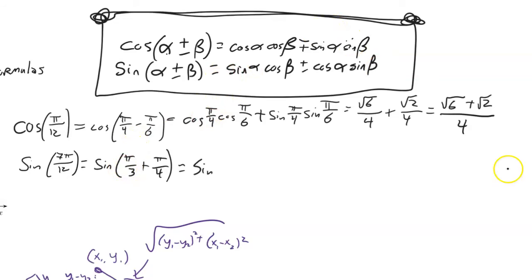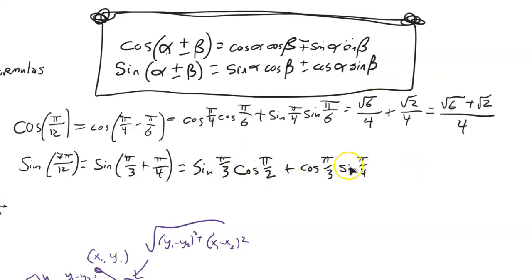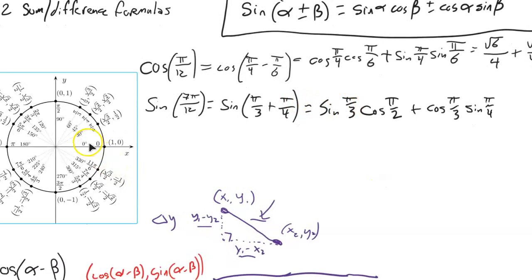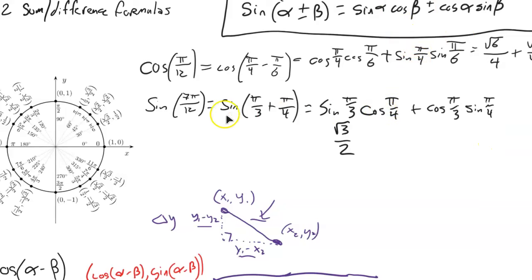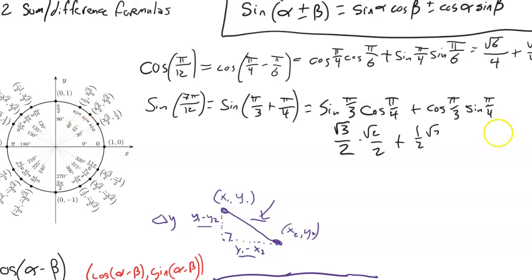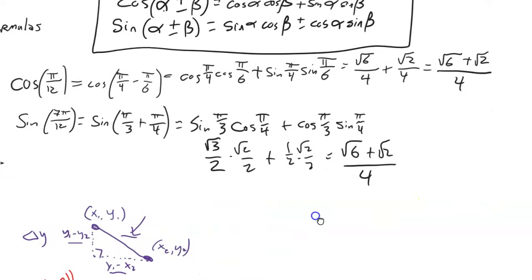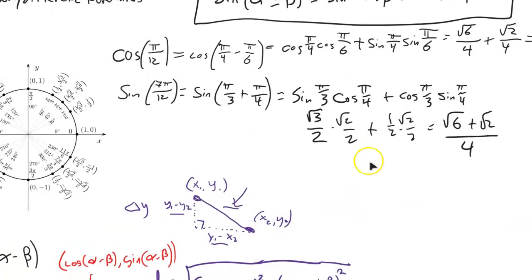Let's use the sine formula to find sine of 7pi over 12, which we broke up as pi over 3 plus pi over 4. It's sine of pi over 3 times cosine of pi over 4, plus — same operator — cosine of pi over 3 times sine of pi over 4. Sine of pi over 3 is root 3 over 2, cosine of pi over 4 is root 2 over 2, cosine of pi over 3 is 1/2, and sine of pi over 4 is root 2 over 2. Multiplying gives root 6 over 4 plus root 2 over 4, or (root 6 + root 2) over 4.